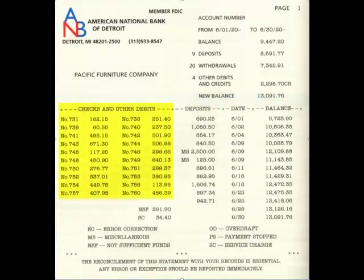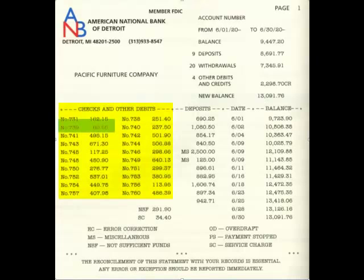If you look on the left hand side, kind of in the middle of the page, it has checks and other debits. Notice these checks are not listed down the left hand side in chronological order but rather they go across the page. So you have check 731 followed by 738, then 739 back on the left and 740 on the right. That's the order of this particular bank statement.